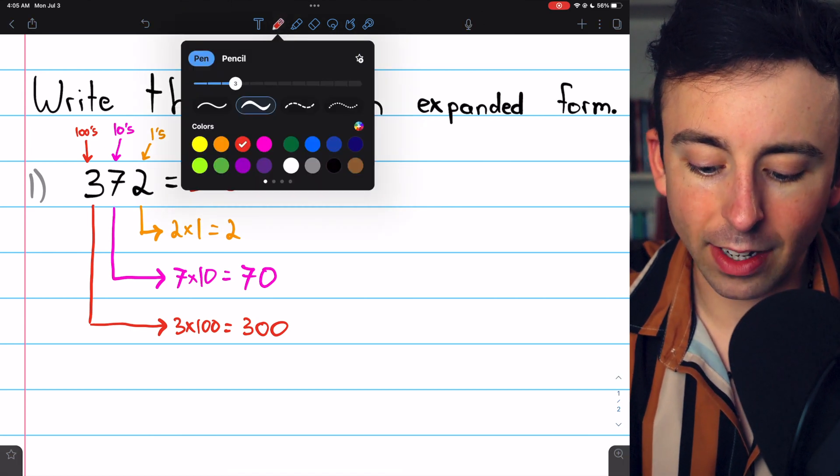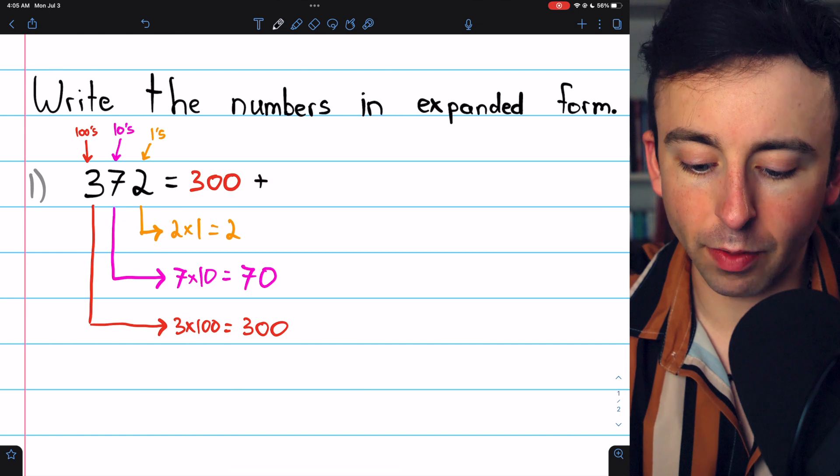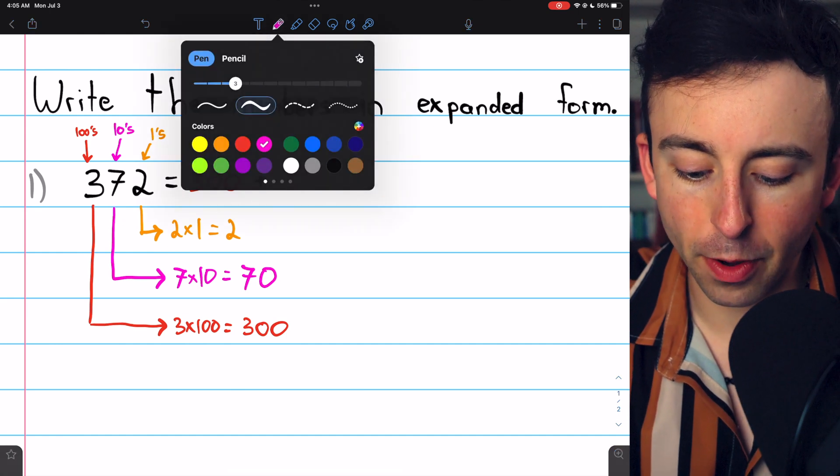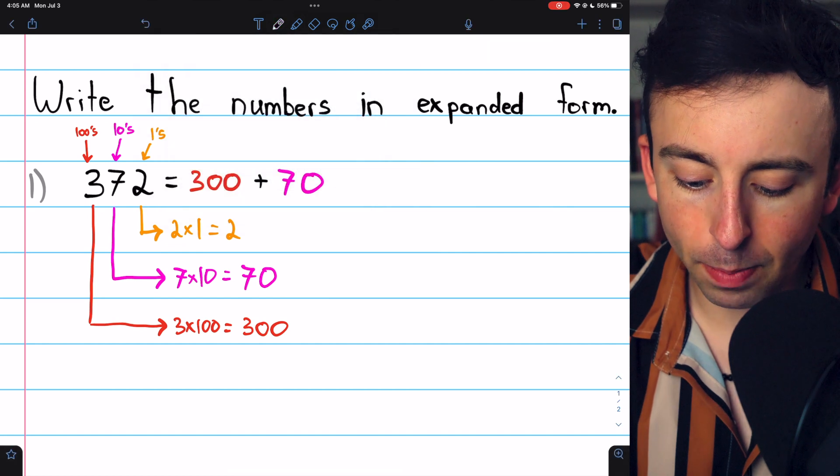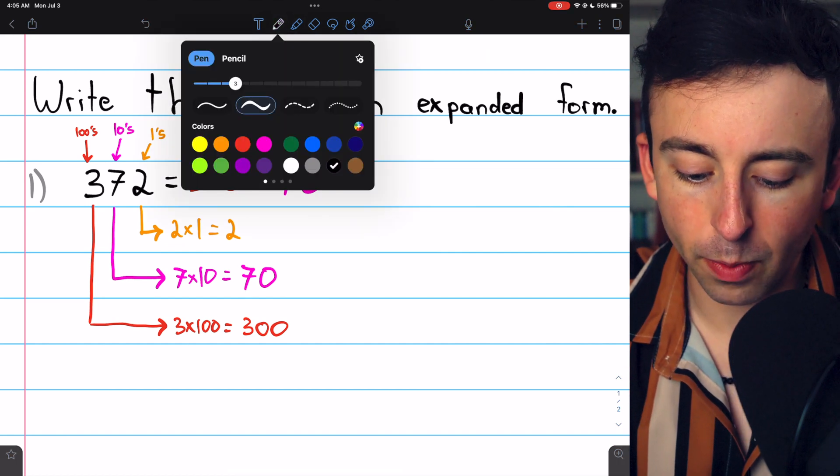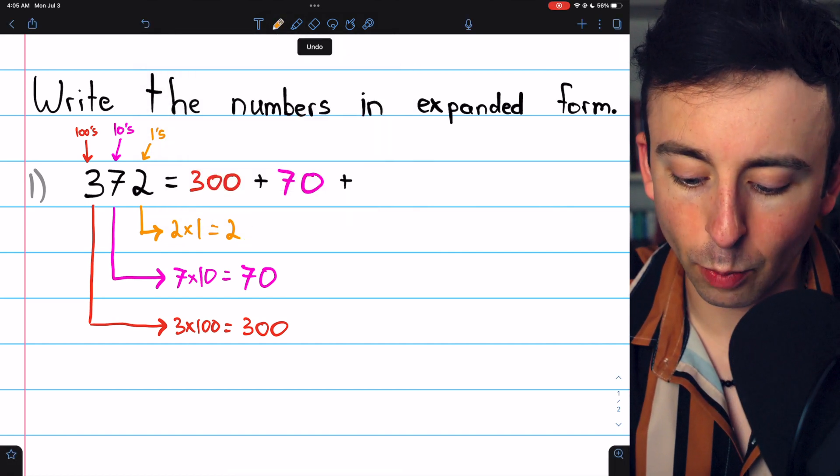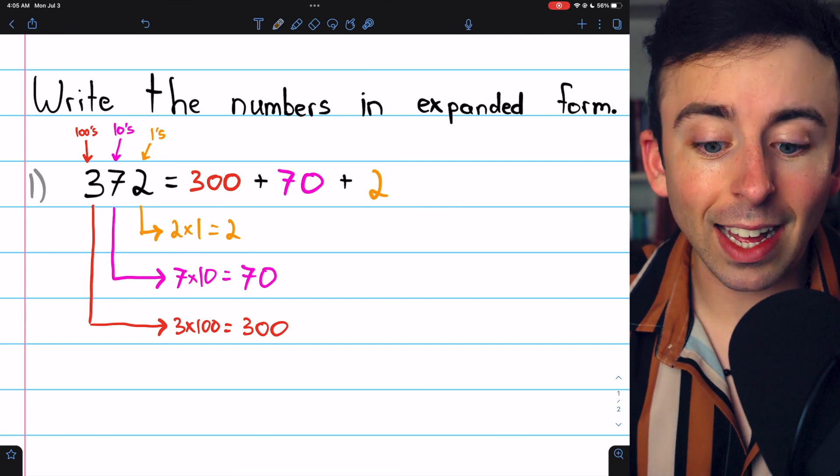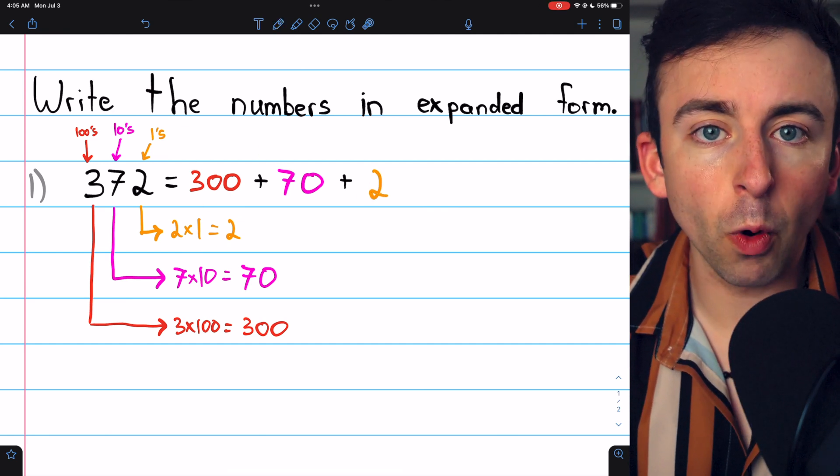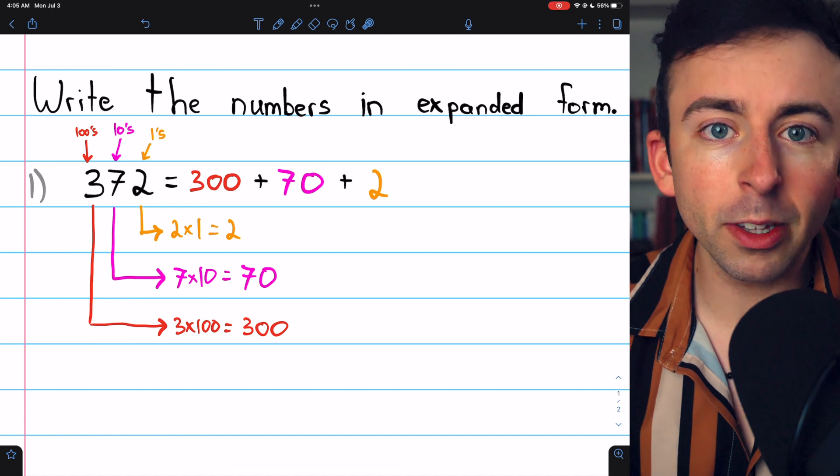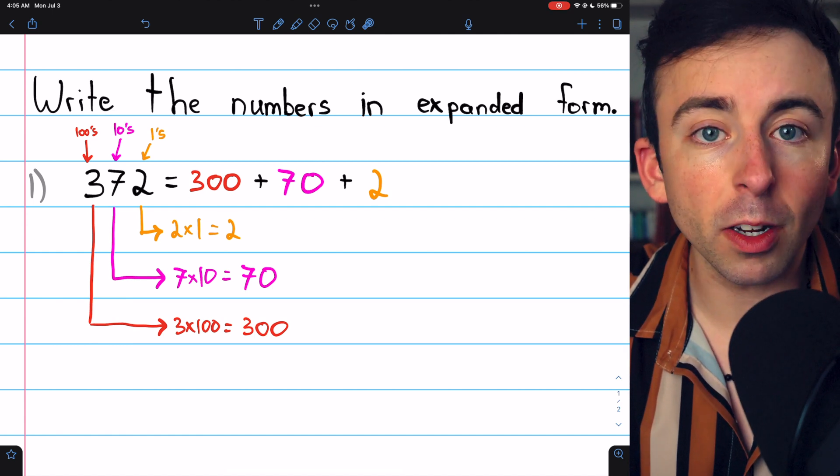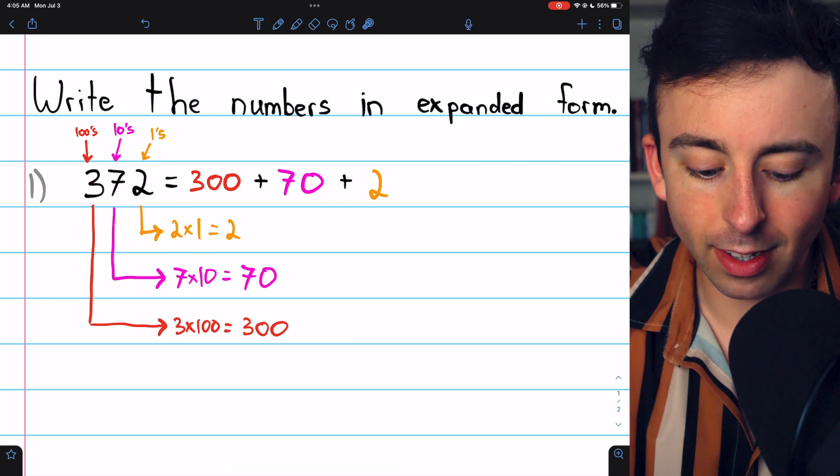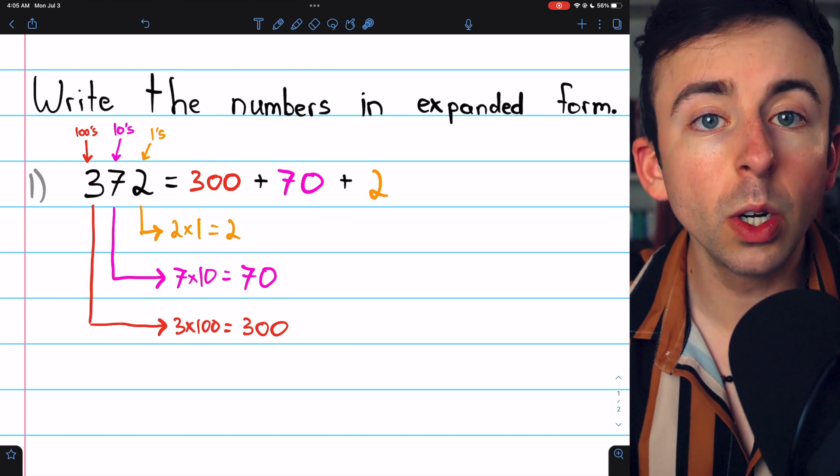300, we're going in order from the biggest place value to the smallest place value. So it's 300 plus 70, and then plus the smallest place value, which is the 1's place. We have 2 1's. That's how to write the number in expanded form. Go from the largest place value down to the smallest place value, and write what each digit represents. 3 100's, 7 10's, 2 1's.